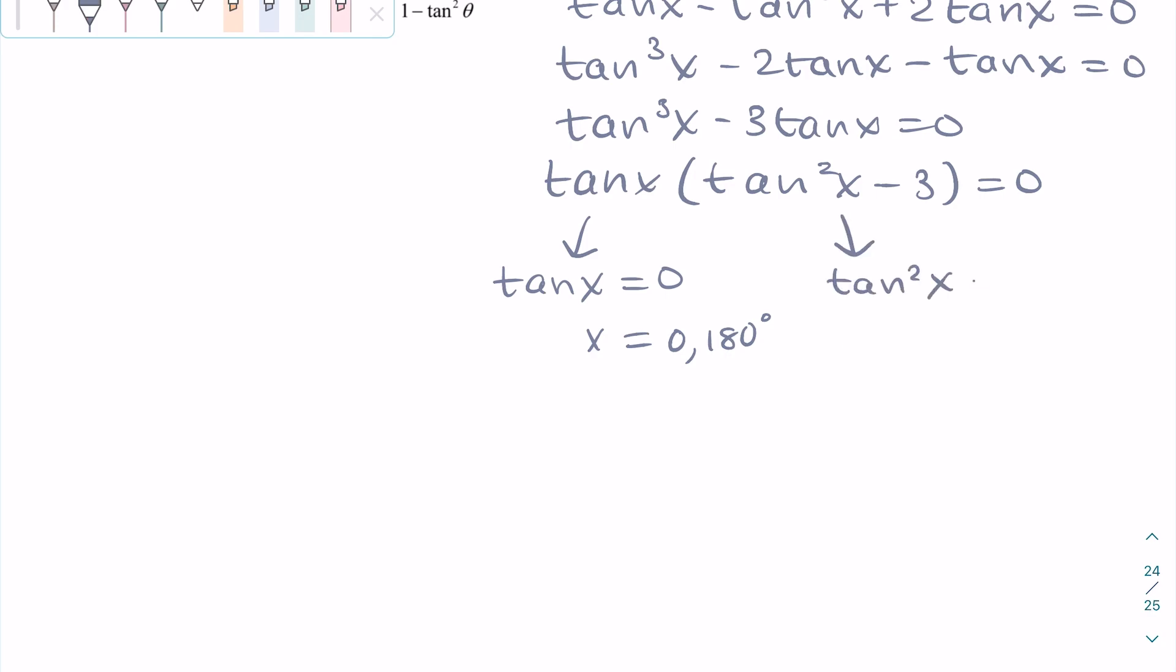We can move on to the second factor. So in the end we get tan x equals plus or minus square root of 3. Tan is plus square root of 3 at 60 degrees and 240 degrees, and it's minus square root of 3 at 120 and 300 degrees.